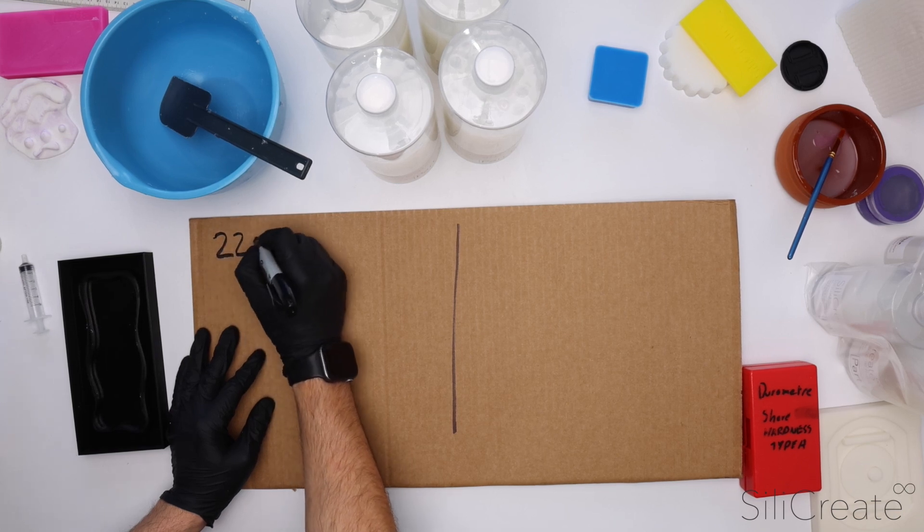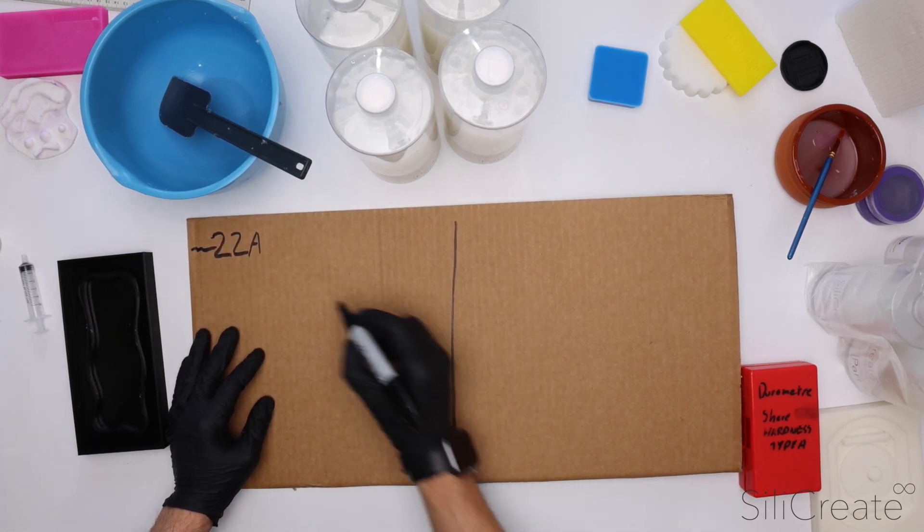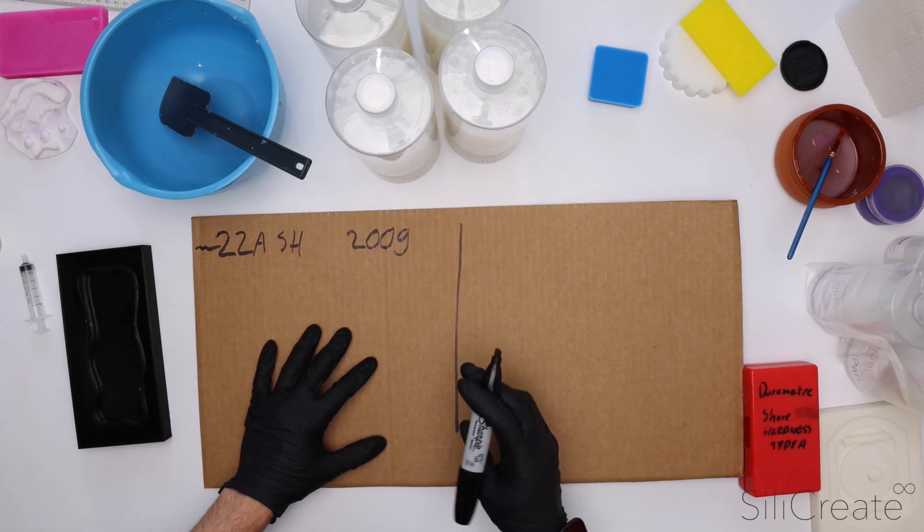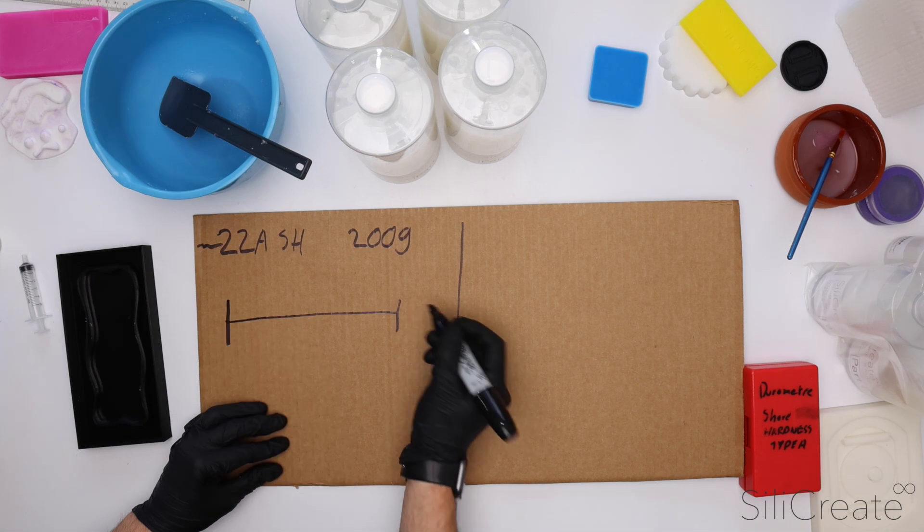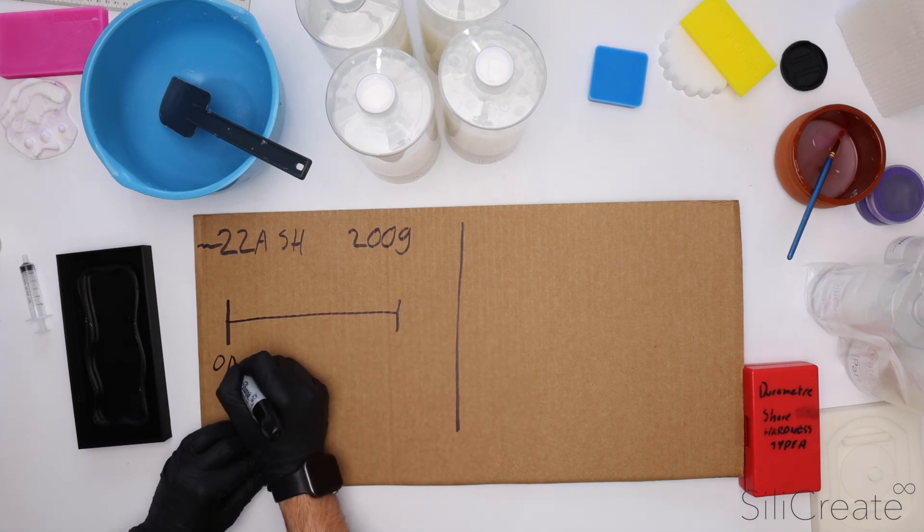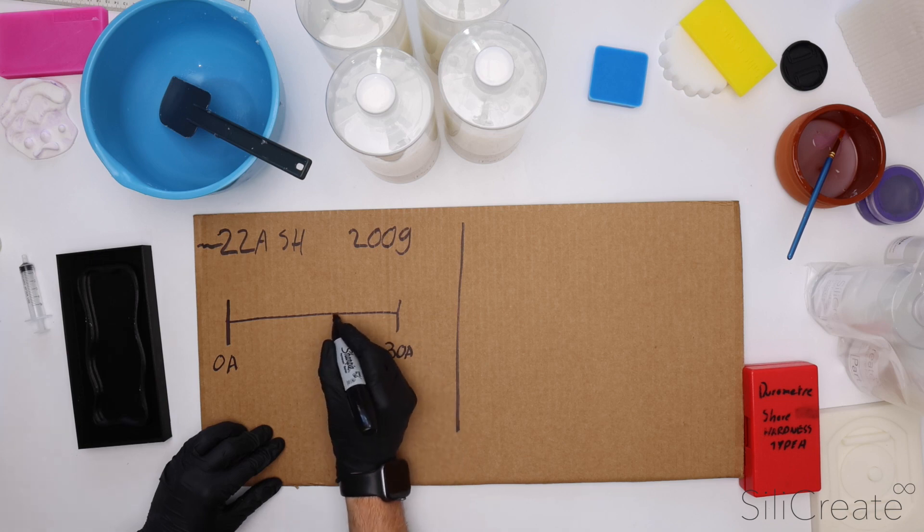So we're gonna be shooting for roughly a 22A shore hardness. We'll make up 200 grams of silicon. So the way I like to do this is just put it all on a number line. So if we say we've got our 0A here and our 30A here and we're shooting for around a 22A.